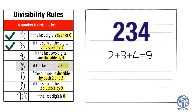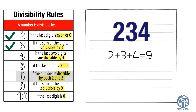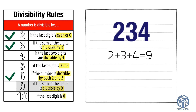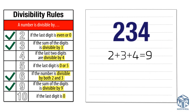Let's check if it's divisible by 5: the last digit is not 0 or 5, so it is not divisible by 5 without a remainder. Let's check if it's divisible by 6: 234 is divisible by both 2 and 3, so it is divisible by 6. Let's check if it's divisible by 9: the sum of the digits is 9, which is divisible by 9, so 234 is divisible by 9. It is not divisible by 10 because the last digit is not 0. Using the divisibility rules, we see that 234 is divisible by 2, 3, 6, and 9 without a remainder.